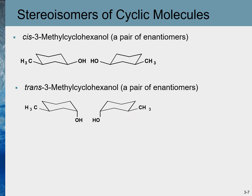Although cyclohexane exists as a chair form, for stereoisomer identification purposes it is sometimes easier to visualize these molecules as a planar ring structure. The following examples show the stereoisomers of 3-methylcyclohexanol, which has this general structure.